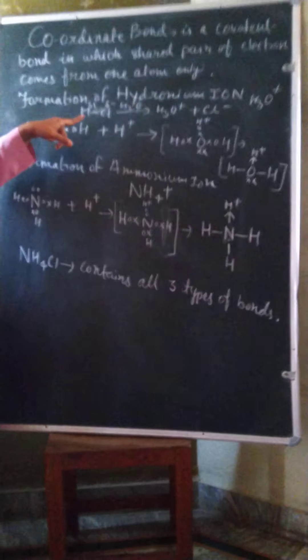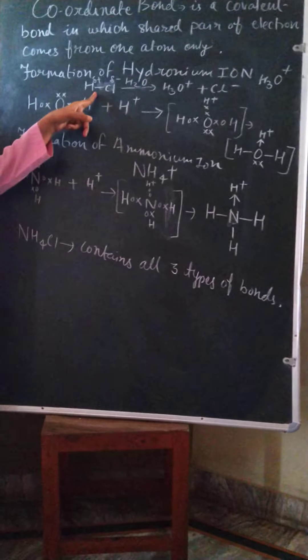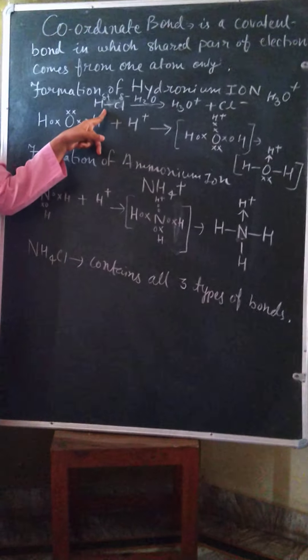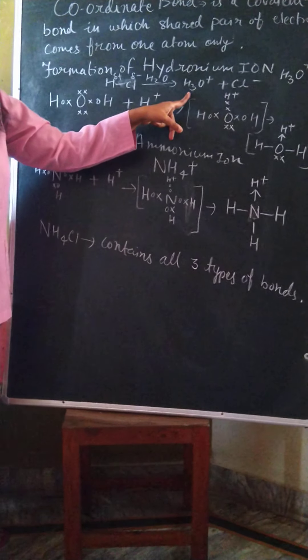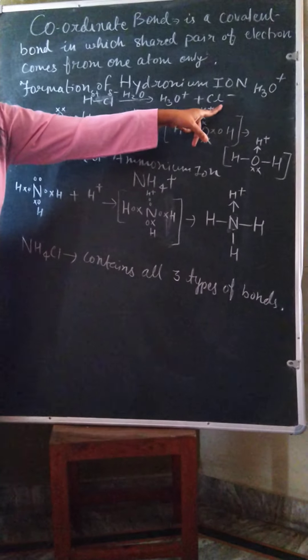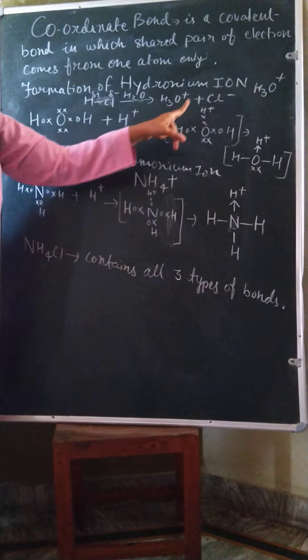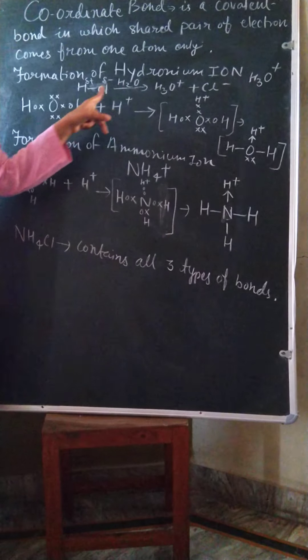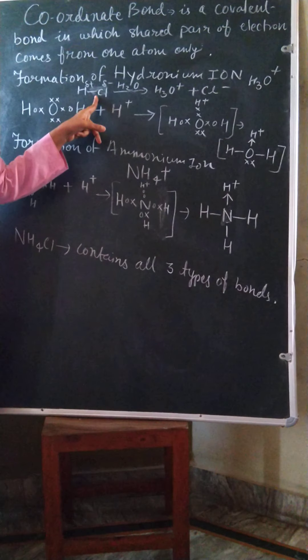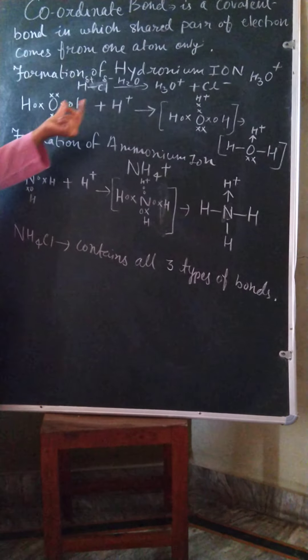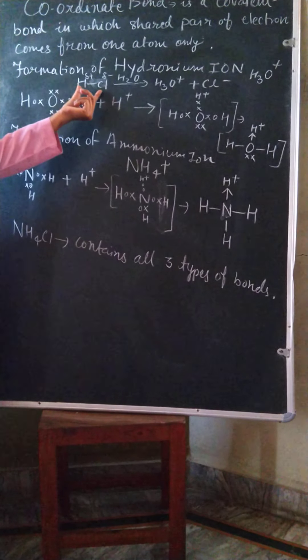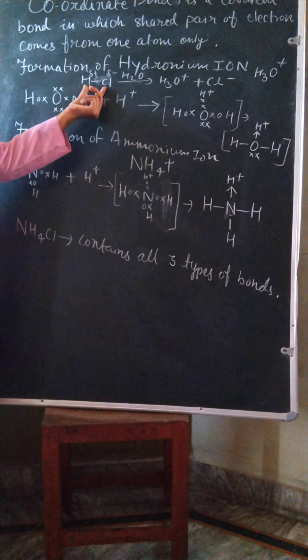Now we have to see the formation of hydronium ion. The question is: how does the hydronium ion form? When HCl, hydrogen chloride gas, is dissolved in water, hydronium ion is formed along with chloride ion. This hydronium ion is the example of coordinate bond, and because of this hydronium ion, hydrochloric acid shows acidic properties.